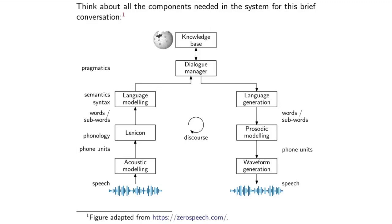A language model at a high level tells us how words are likely to follow each other. You can think of it as incorporating things like syntax, which tells us how words are stitched together — the rules of a language, the grammar — and then at an even higher level, semantics, which relates to the meanings of words.